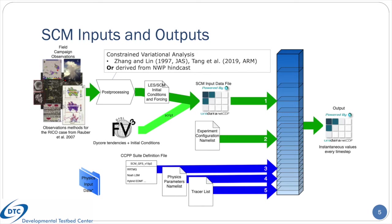The green arrows represent the case configuration and the blue arrows represent the physics configuration. The first file needed is the case input data file, which contains the initial conditions and forcing, and can be derived in a couple of different ways. The first way is from observations like a field campaign, where folks post-process observations into a meteorologically balanced initial state and time-dependent forcing, converted into the NetCDF format the SCM expects. The second way is to use initial conditions from a point in a 3D model and save the dynamics tendencies for that column to use as forcing. Today, the first method is primary, while a script reading UFS initial conditions and outputting a case input data file is in active development.